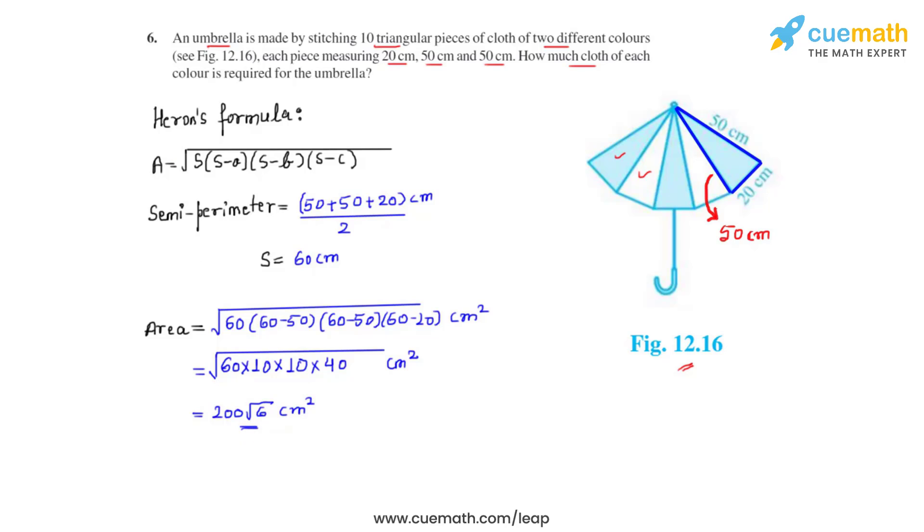Now, as we had seen in the question, there are 10 triangular pieces of cloth of two different colors. So each color will have five such triangular pieces of cloth. Let's find the area for them.